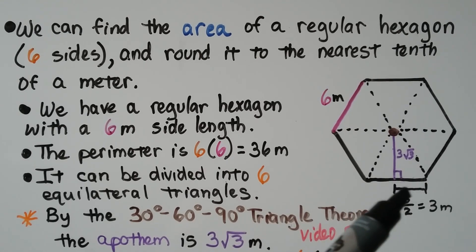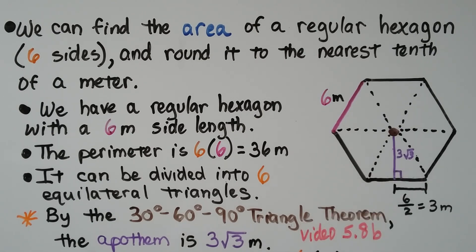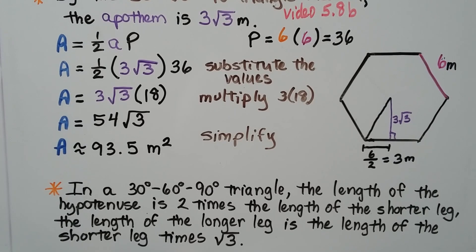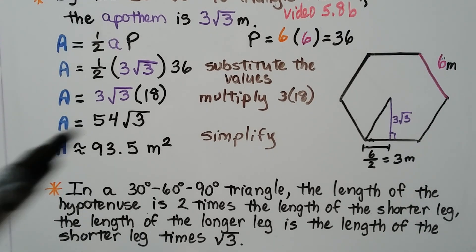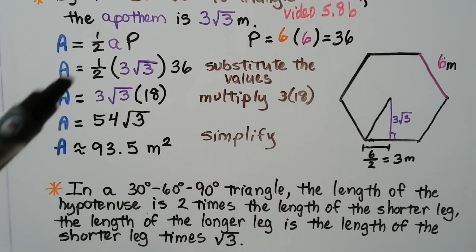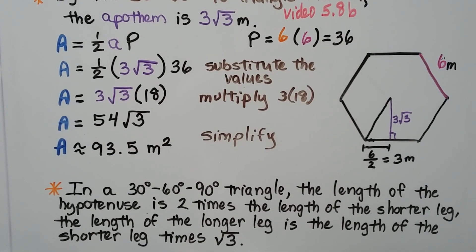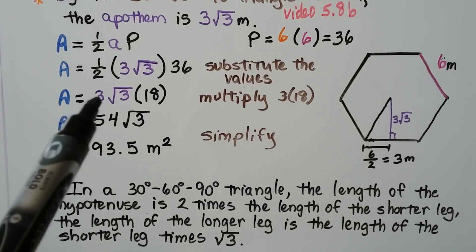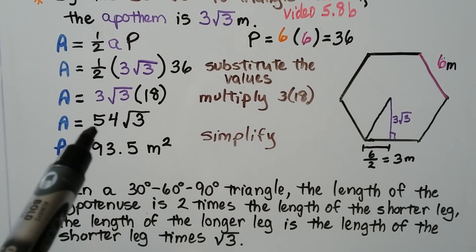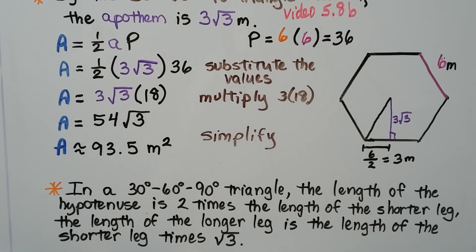Remember, here we've got three meters because it's half of the six. Using our formula, area equals half ap, our apothem is 3√3 and our perimeter is 36. When we substitute the values, we multiply the three by 18 and get 54√3, which simplifies on our calculator to approximately 93.5 meters squared.